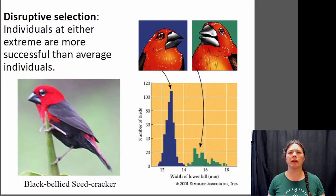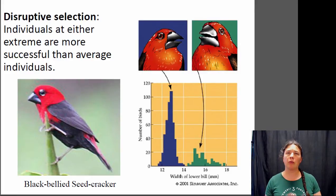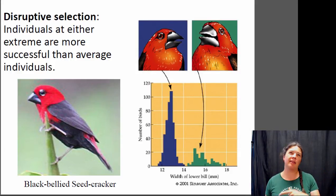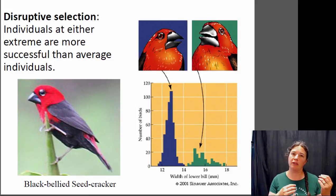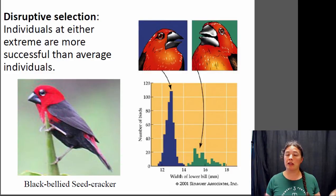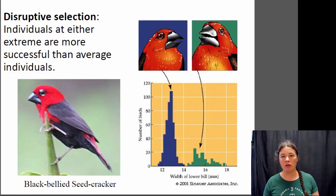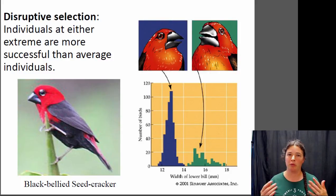Disruptive selection is actually relatively rare. One example is the black-bellied seed cracker, an African species. They live in an area where there are two predominant seed types: big seeds and small seeds. If you have a big beak you can effectively eat the big seeds; if you have a smaller beak you can effectively eat the small seeds; but if you have an in-between beak there's not really much for you to eat. So there is selective pressure either to have big beaks or to have small beaks, and not to have beaks in the middle. When you look at populations of these seed crackers, individuals either have big beaks or small beaks — you don't see many individuals with medium beaks because they've been selected against.